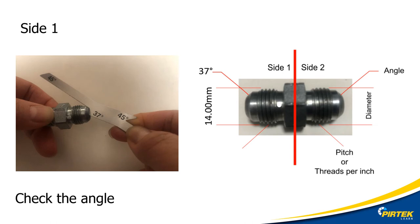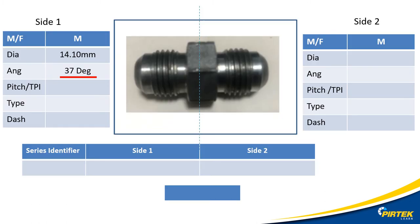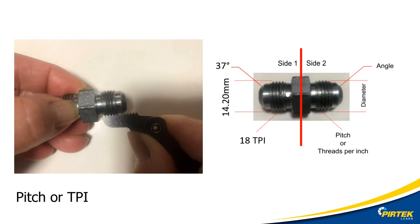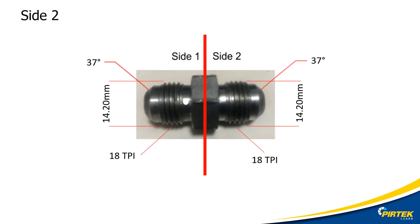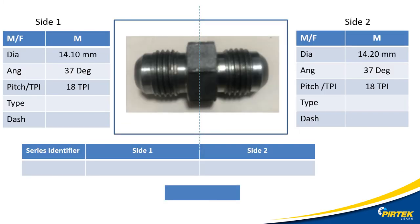Now I'll identify the seat angle — in this case, it's 37 degrees. Next, I determine the pitch or threads per inch using the screw pitch gauge from the PERTEC thread identification kit. My screw pitch gauge tells me it's 18 threads per inch. I then measured side two, which is exactly the same as side one, and entered all the information into the template.